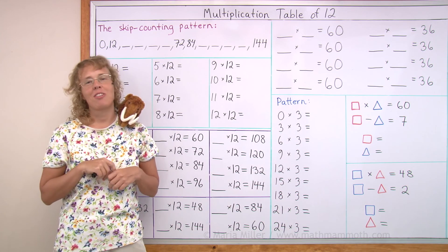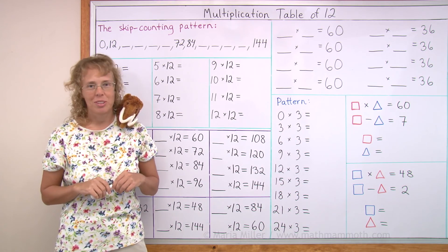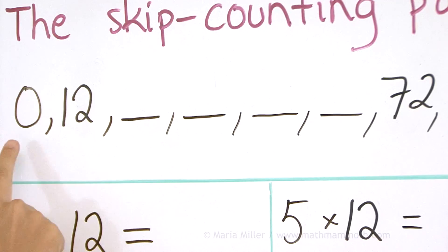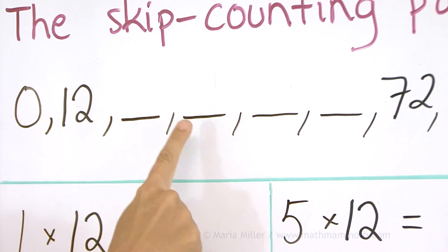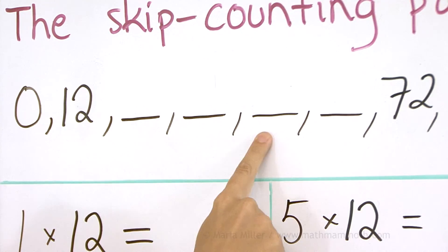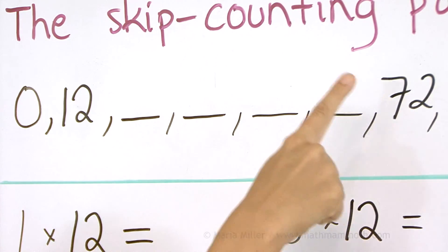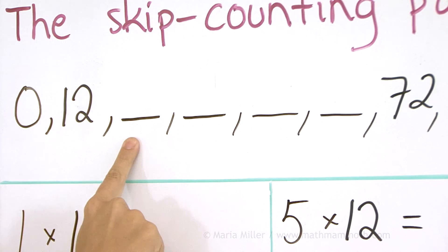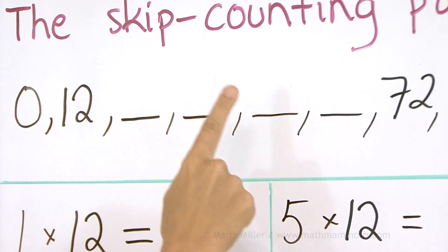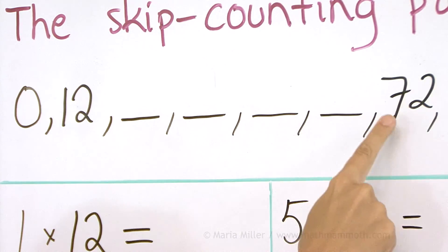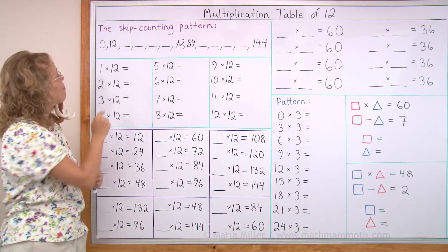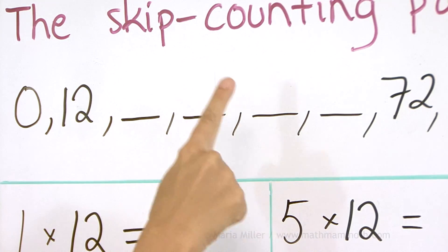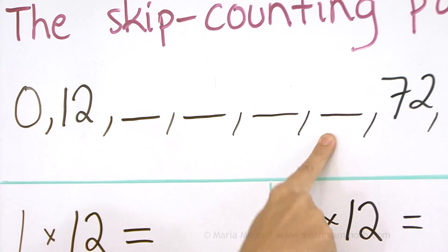You already have studied all the other ones while studying the other tables. Now let's go through the skip counting pattern. We have 0, 12, 24, 36, 48, 60, and 72. Again: 0, 12, 24, 36, 48, 60, and 72. Your turn: 0, 12 ... 72.